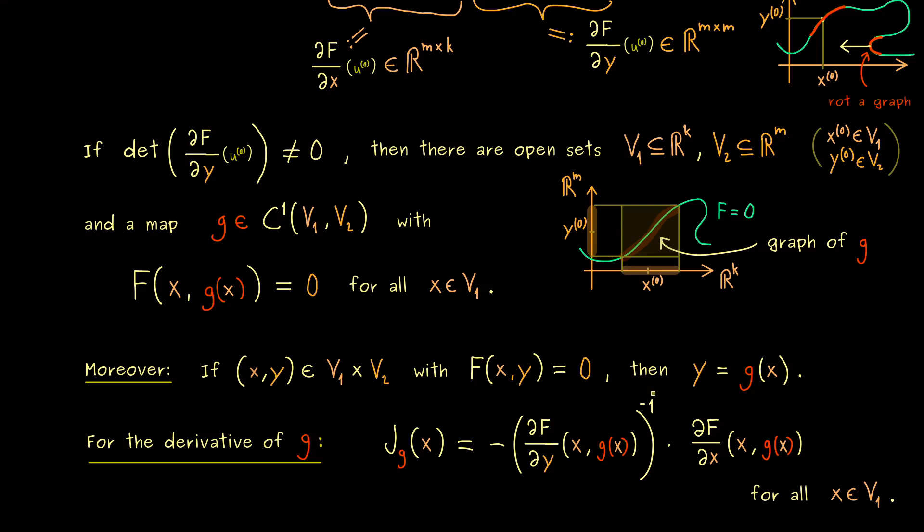So in summary, the implicit function theorem tells us about the existence of two open sets V_1 and V_2 and about the existence of a function g such that all of this holds. And this is why it is such an important theorem, because it justifies that we can always work with such an implicit function g.